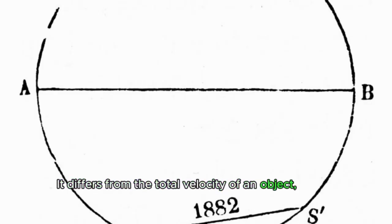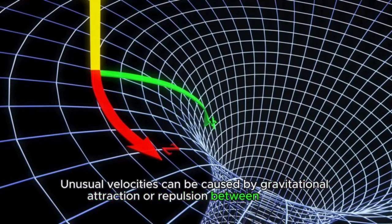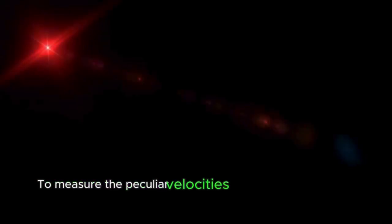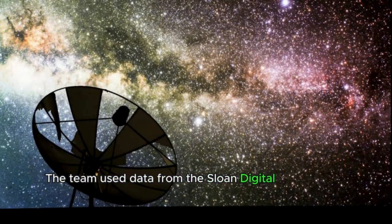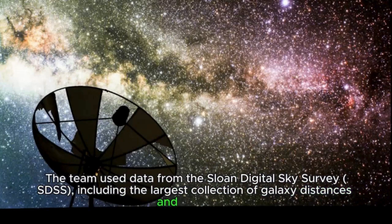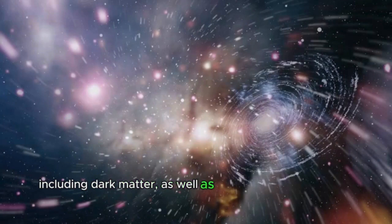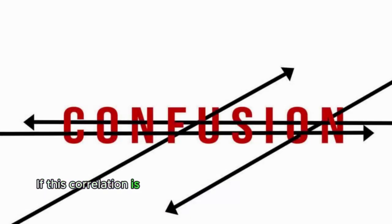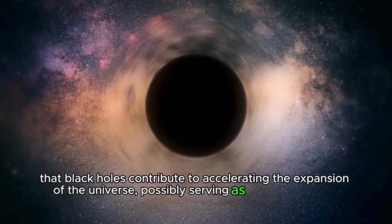It differs from the total velocity of an object, which accounts for the expansion of the universe. Unusual velocities can be caused by gravitational attraction or repulsion between objects, and their study can provide information about the distribution of matter in the universe. To measure the peculiar velocities of galaxies, they used a technique called the redshift space distortion method. The team used data from the Sloan Digital Sky Survey, including the largest collection of galaxy distances and velocities. The results showed that the peculiar velocities of galaxies correlate with the local density of matter, including dark matter, as well as with the density of black holes. This suggests that the motion of galaxies is affected not only by the gravity of the visible matter, but also by the presence of black holes. If this correlation is confirmed by further research, it could support the idea that black holes contribute to accelerating the expansion of the universe, possibly serving as a source of dark energy.